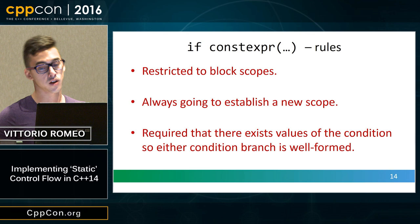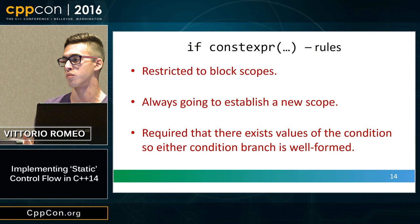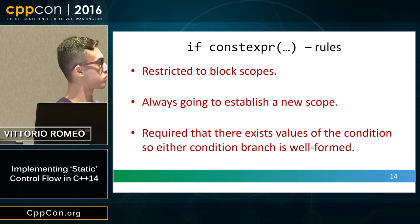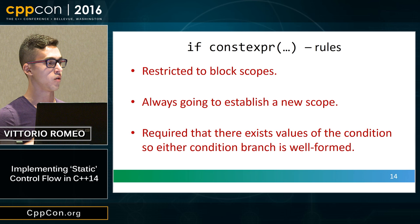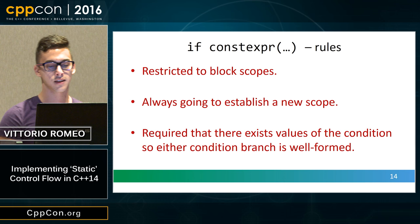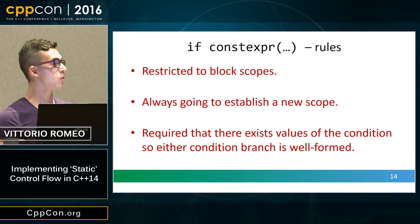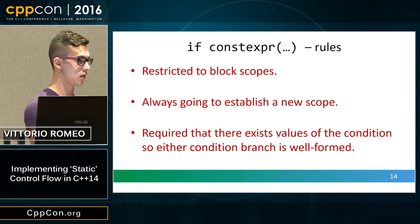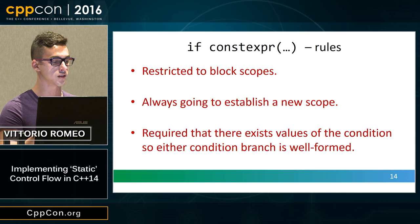There are some rules. If constexpr is always restricted to block scopes, it always establishes a new scope, and it requires that both condition branches be well-formed. Everything inside the scope is limited to that scope — you cannot do crazy stuff like in D. The third rule says all branches need to be parsable, but will only be instantiated if the condition matches. Even if a class doesn't support an operation called in a branch, you won't get a compile error unless the condition is true.